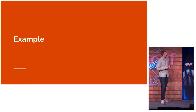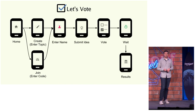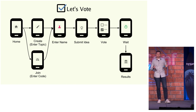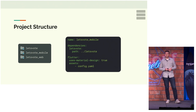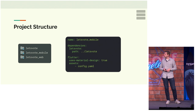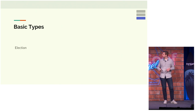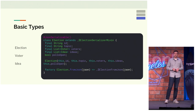Let's go through an example. A big problem for a lot of companies — unless you're at Google — is deciding where to get lunch. So we solved this problem by building a voting app. Our voting app has some state to manage and a few pages: a user might create an election, enter their name, submit an idea, wait for others to join and vote, then show the results. To do this, we break our app into separate packages: our shared logic in our 'let's vote' package, our Flutter package, and our web package. Flutter and web packages just import the shared package. In the shared package we have basic types like Election, Voter, and Idea, each knowing how to serialize to and from JSON using the JSON serializable package.